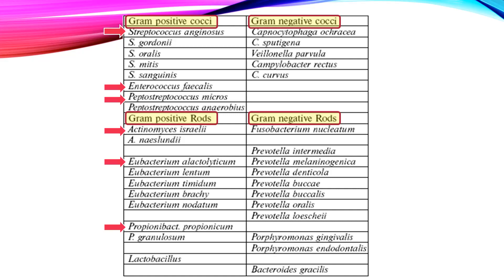In gram-positive rods, you must remember Actinomyces israelii, Eubacterium species, and Propionibacterium propionicum. In gram-negative cocci, Capnocytophaga species and Veillonella parvula are the most important microorganisms isolated from the infected root canal. Among gram-negative rods, Fusobacterium nucleatum and Prevotella intermedia must be remembered.